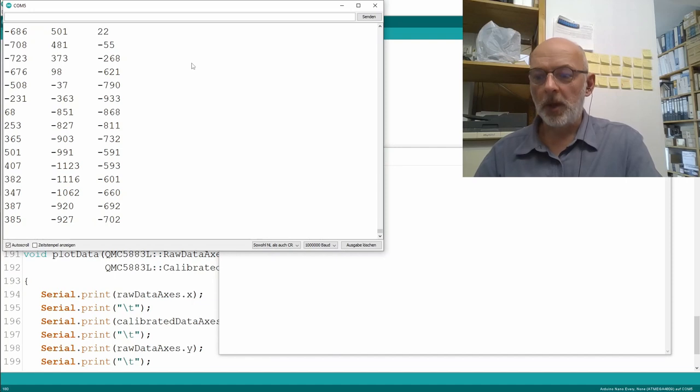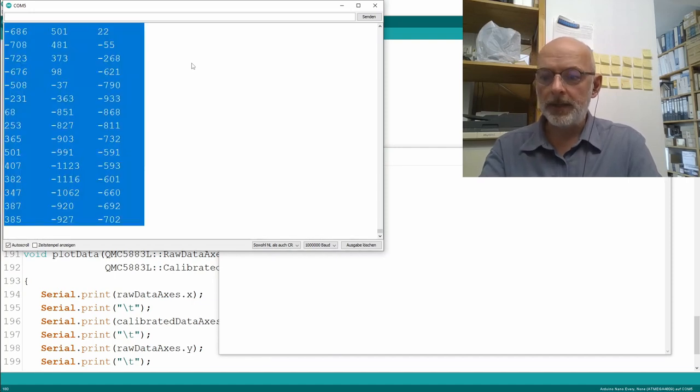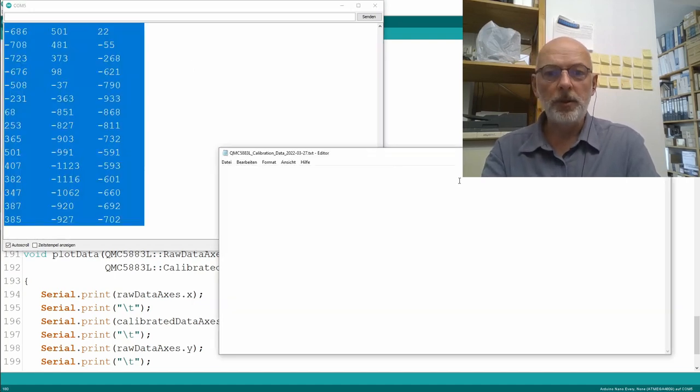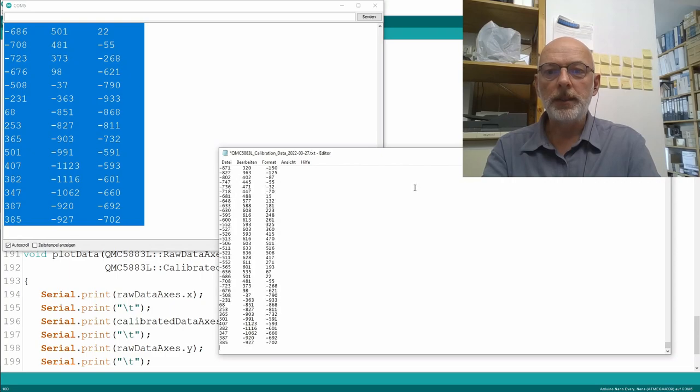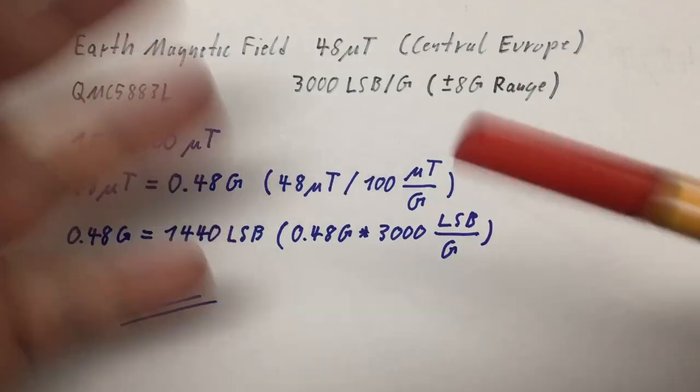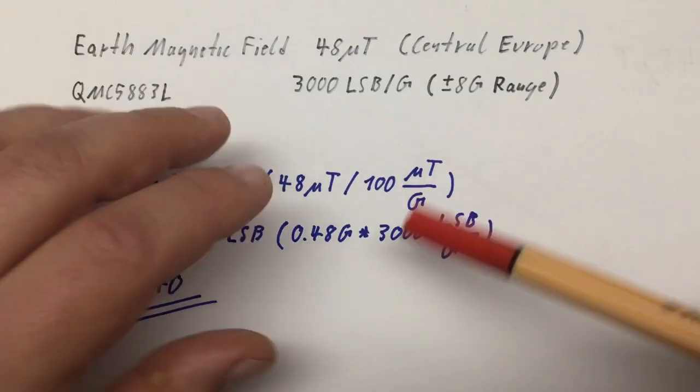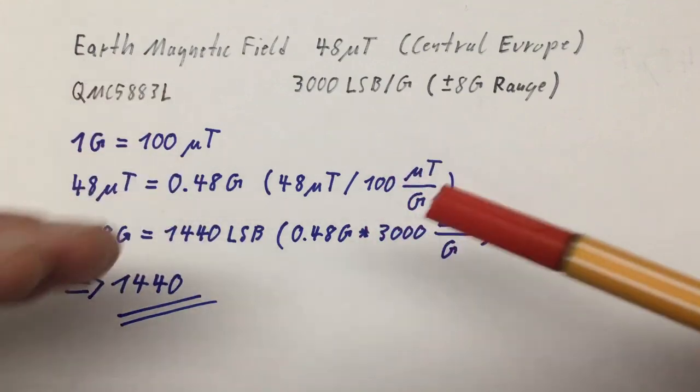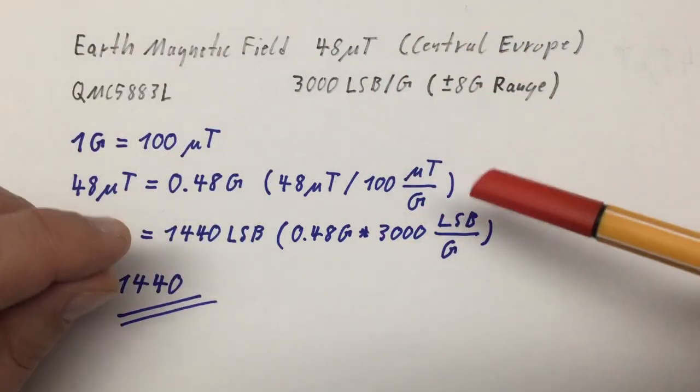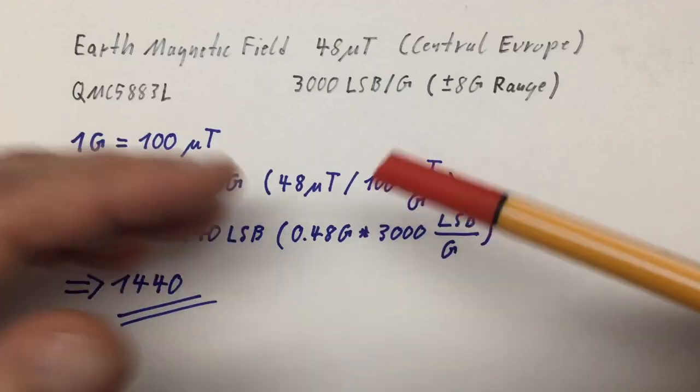Now I'm just copying all the data from the serial monitor into a text file. Before we can use that Windows software to calculate our correction matrix from the calibration data we collected, we have to do some more math.